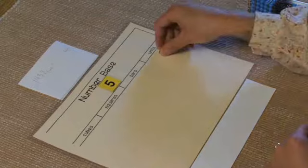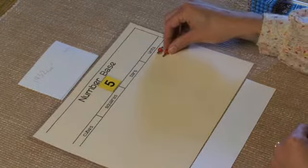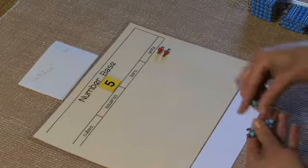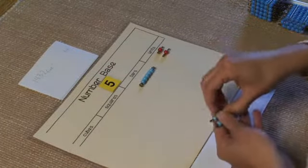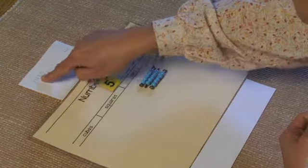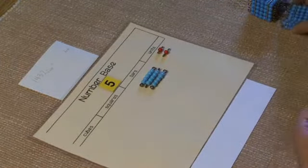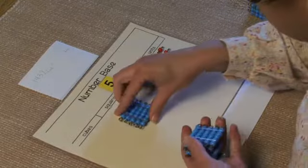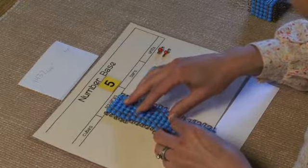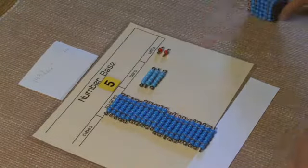In this example, I have two units. I'm going to have three bars. We have four squares. And we have one cube.